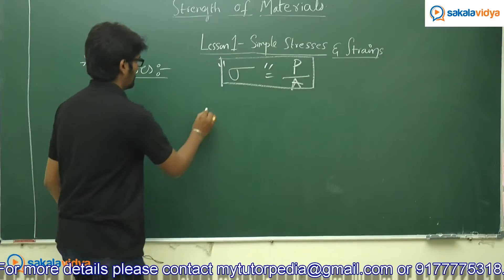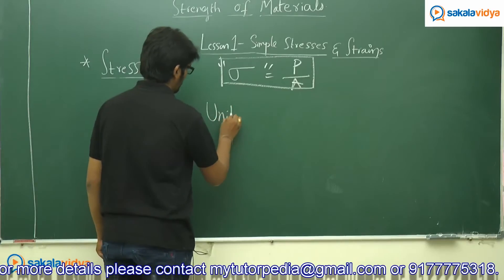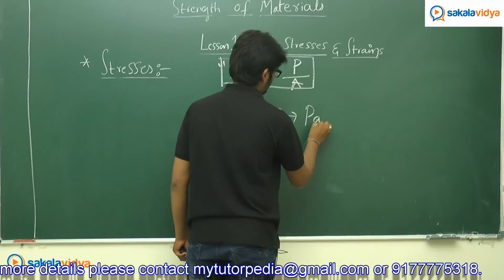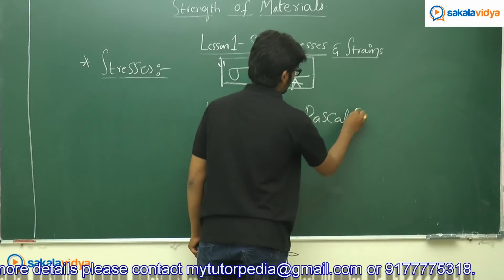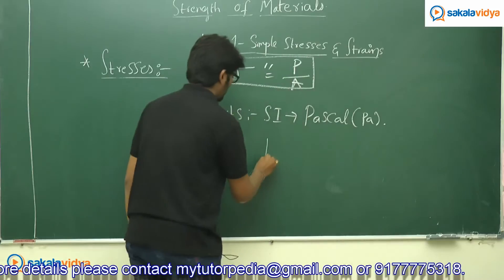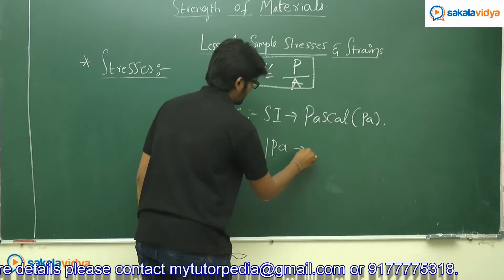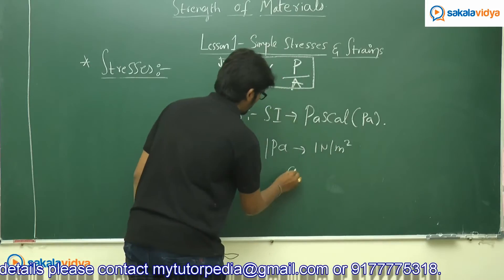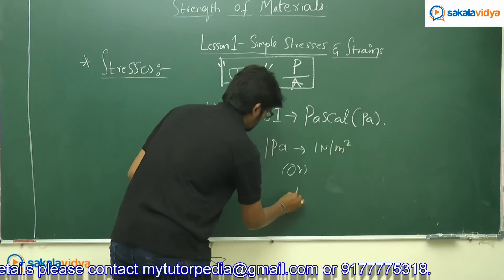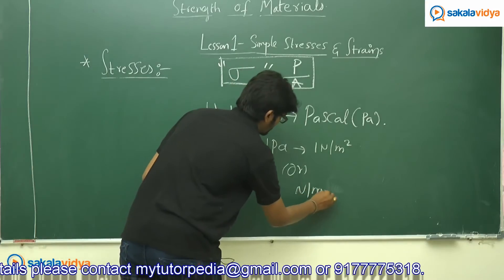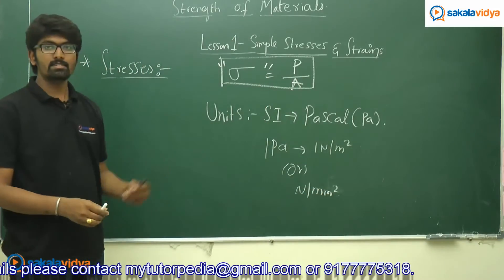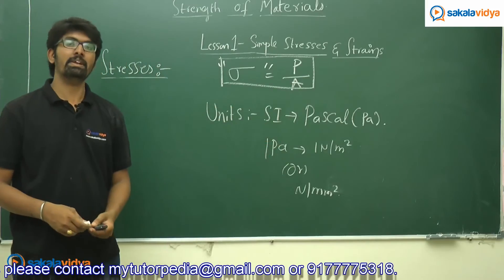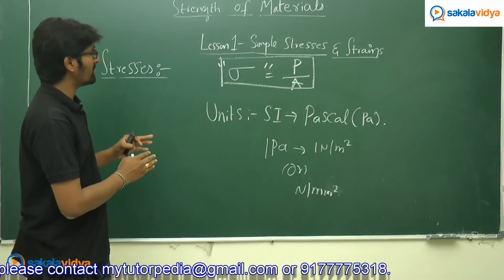The units of stress in SI units are Pascal (Pa). One Pascal equals one Newton per meter squared (1 Pa = 1 N/m²). Stress can also be expressed in Newton per millimeter squared (N/mm²).